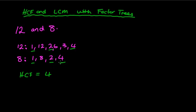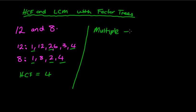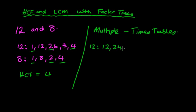Now what about the lowest common multiple? A multiple — another word for it would be the times tables. So if we're looking at the multiples of 12, we're looking at the 12 times table: 12, 24, 36, 48.